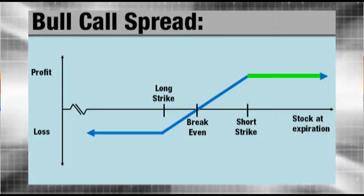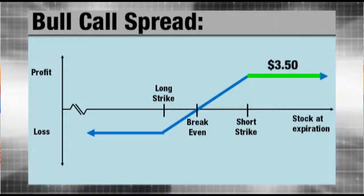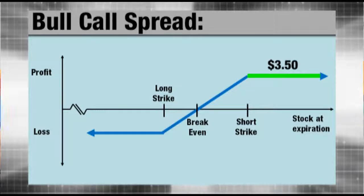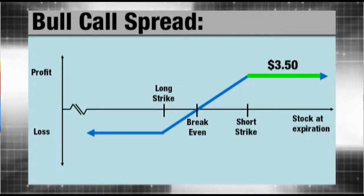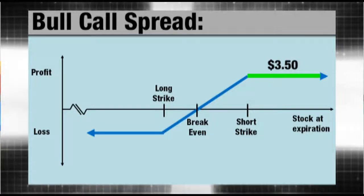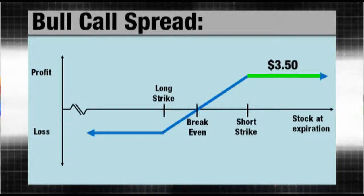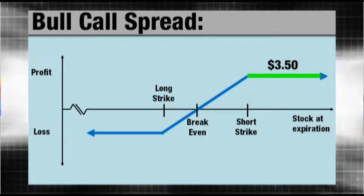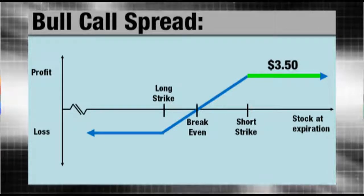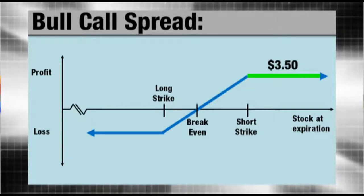Now specifically, in this example, I could make $3.50. That's because if the stock is above $55 a share at October expiration, I could exercise my 50 calls thereby buying the stock at 50. I would get assigned on my 55 calls, thereby selling the stock at 55. That would net me $5, but I paid $1.50 for that spread, so my total potential profit would be only $3.50.